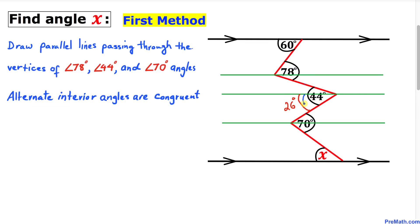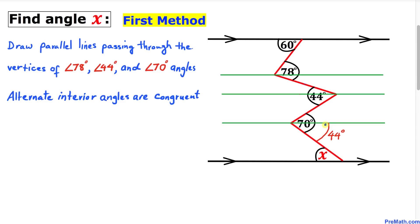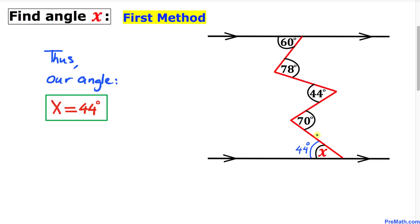Now focusing on the 26 degree angle — these are again alternate interior angles. If this angle is 26 degrees, this corresponding angle is also 26 degrees. Since the whole angle is 70 degrees, this remaining angle is 70 minus 26 equals 44 degrees. These final two angles are alternate interior angles, so angle x equals 44 degrees.